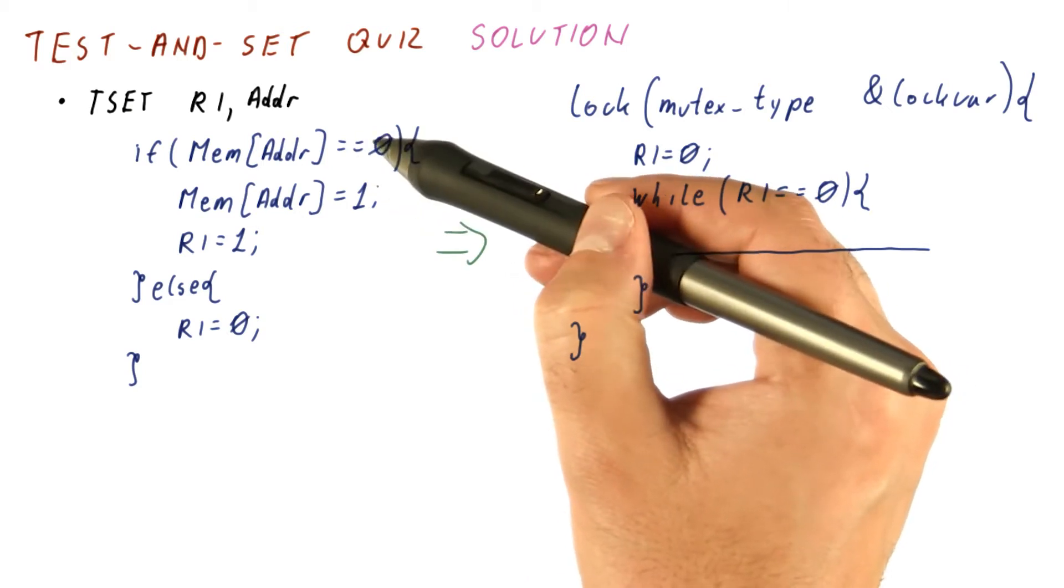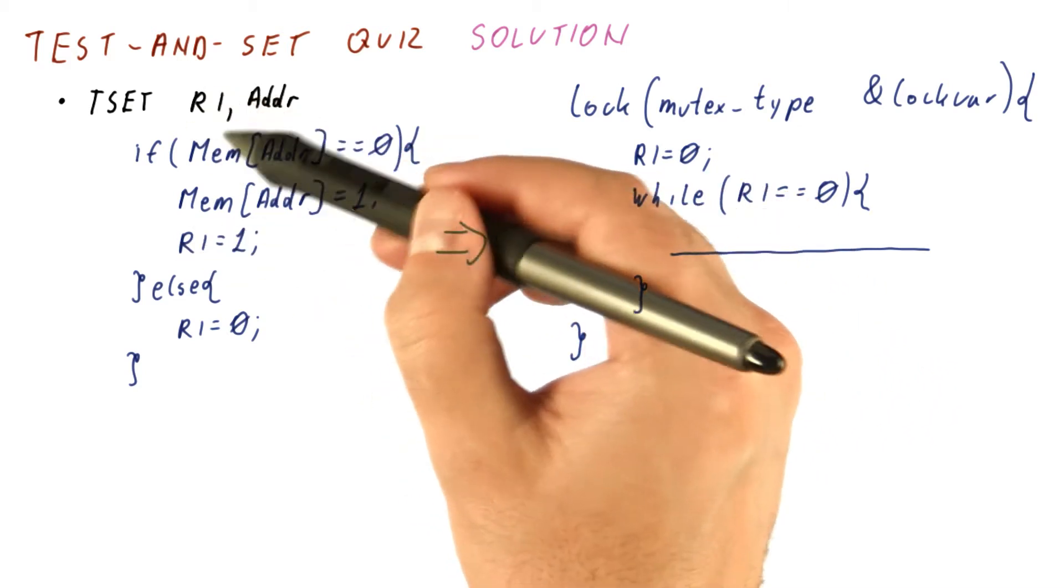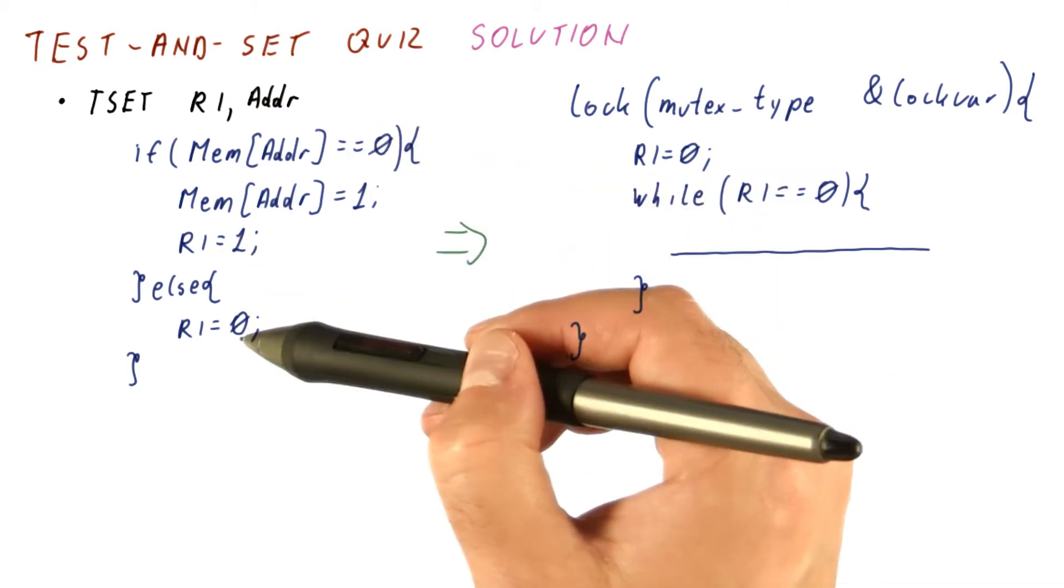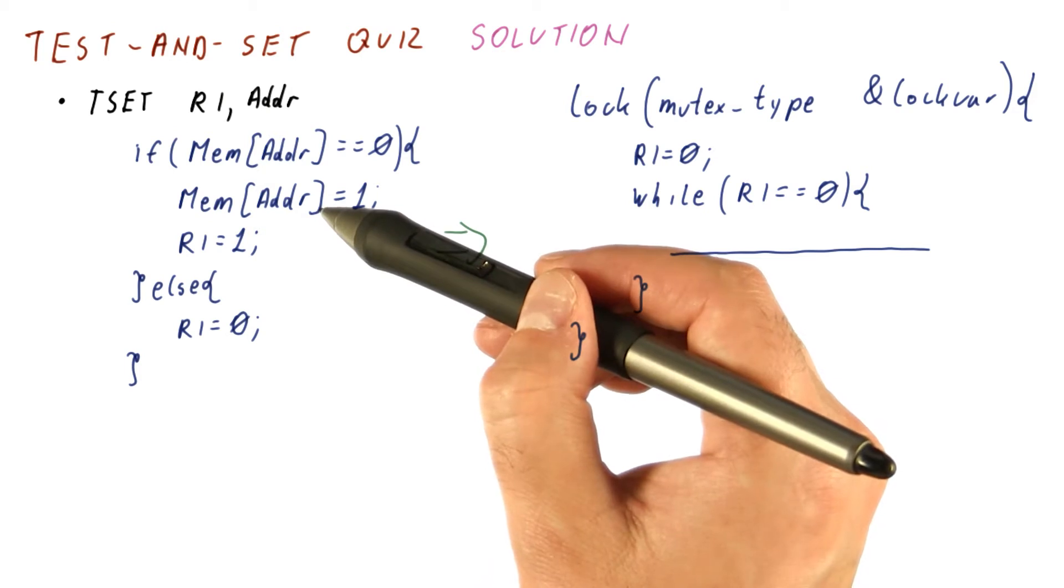If that location is 0, then we write a 1 there and set the register to 1. If the location is not 0, then we just set the register to 0 without writing to the memory location.